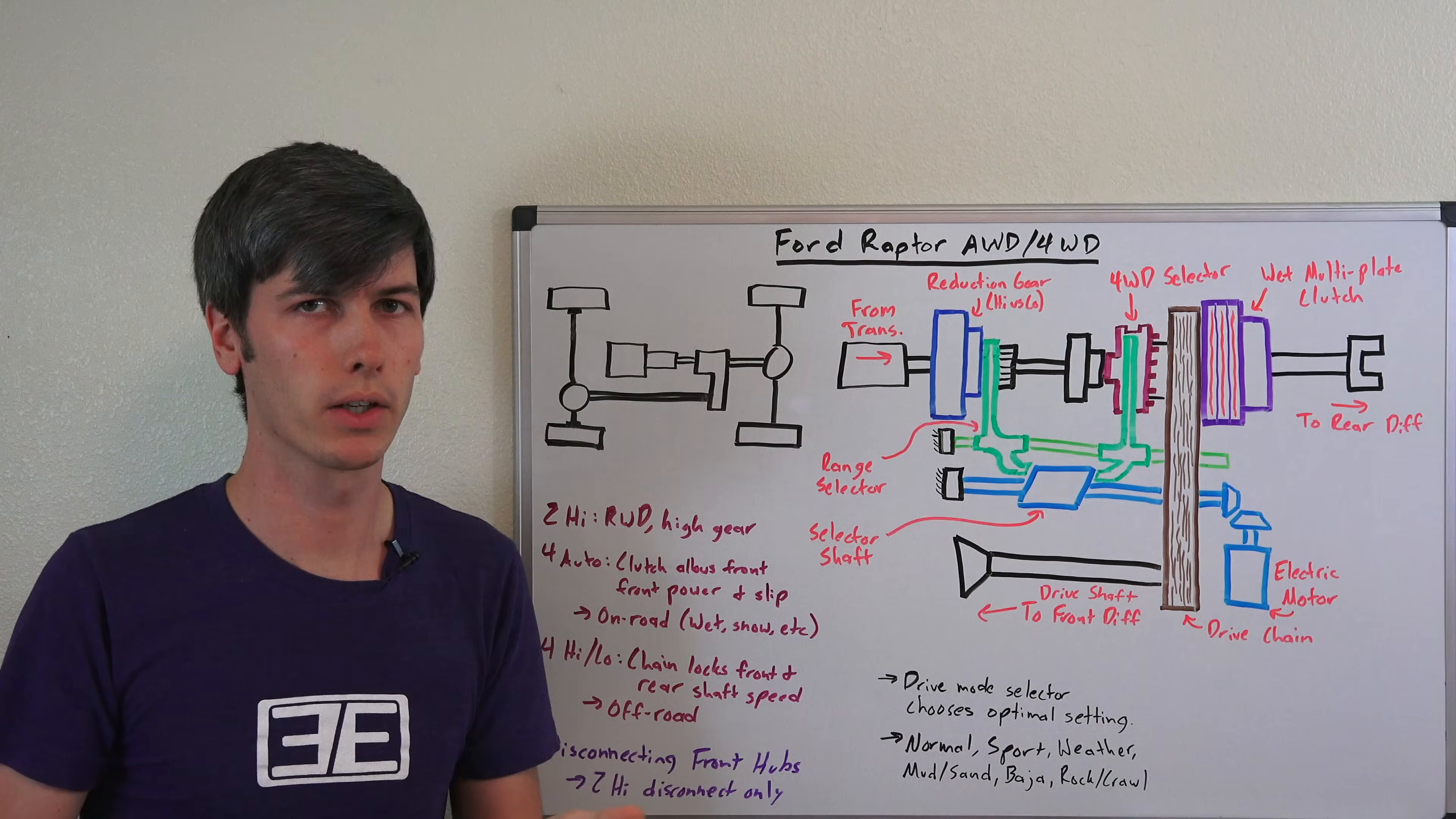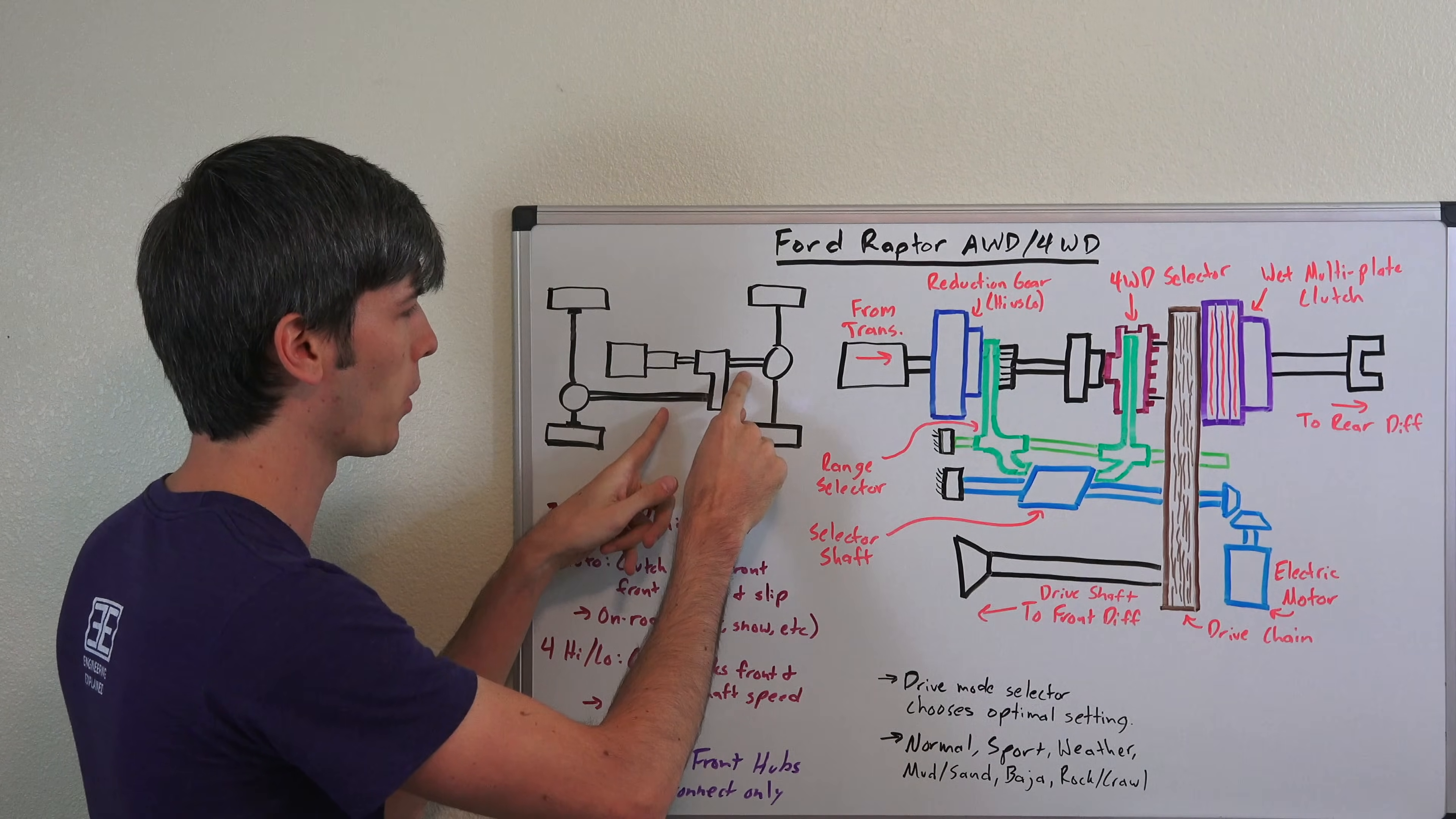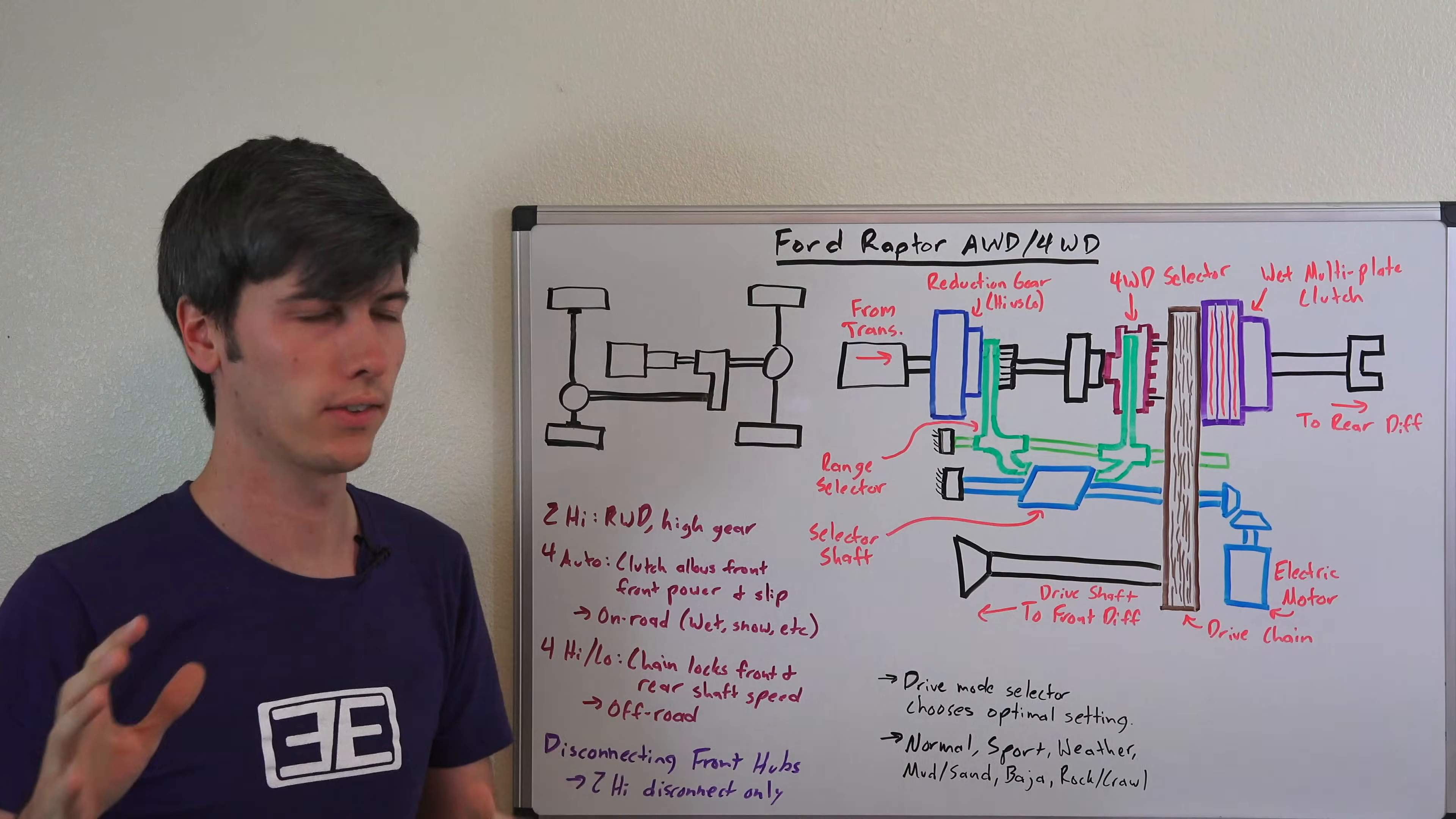Now all-wheel drive vehicles because they allow for a speed differential can drive on pavement versus four-wheel drive vehicles shouldn't drive on pavement if both of these drive shafts are locked and rotating at the same speed because as you go around tight corners it will cause binding within the system.